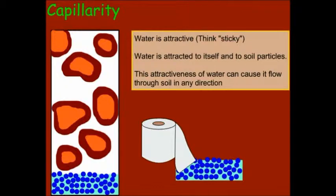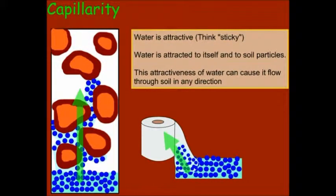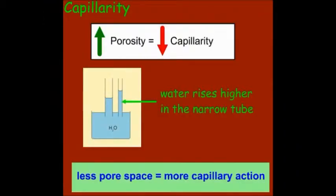Capillarity is based on the fact that water has an attractive force. You can think of water as being sticky to itself and to other things. This attractiveness of water can cause it to flow in any direction, including up against the force of gravity. Water is attracted to soil particles and moves its way up through a column of soil, in the same way that a paper towel stuck into water draws water upward. Capillarity and porosity are indirectly related — the less pore space, the more capillary action. A wider tube will have less capillary action than a more narrow tube.